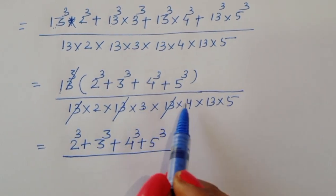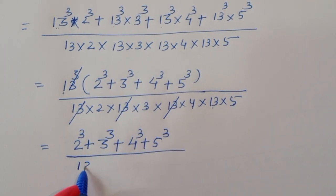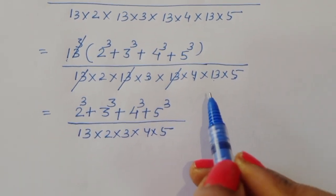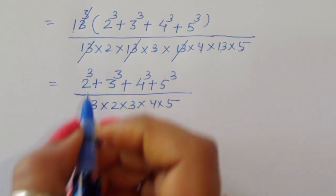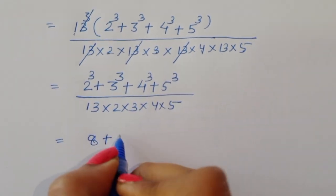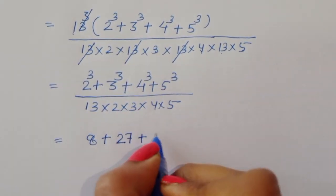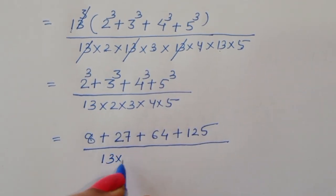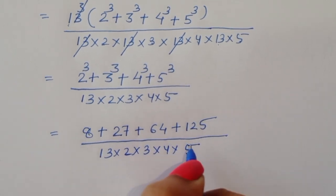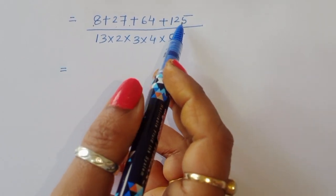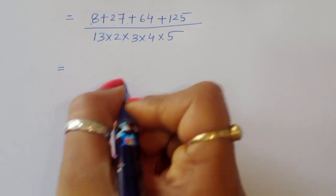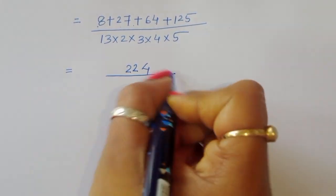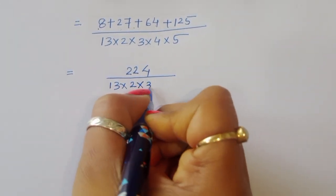So we now have 2 power 3 plus 3 power 3 plus 4 power 3 plus 5 power 3, divided by 2 times 3 times 4 times 5 times 13. Computing the cubes: 2 power 3 is 8, 3 power 3 is 27, 4 power 3 is 64, 5 power 3 is 125. Adding these: 8 plus 27 plus 64 plus 125 equals 224. So we have 224 divided by 13 times 2 times 3 times 4 times 5.